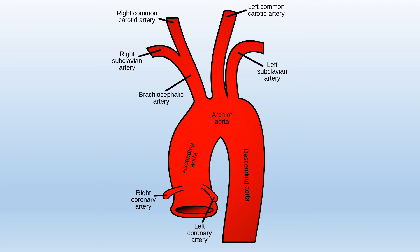The aortic arch is a continuation of the ascending aorta and begins at the level of the second sternocostal joint. It arches superiorly, posteriorly, and to the left before moving inferiorly as the descending aorta. The aortic arch ends at the level of T4 vertebrae. The arch is still connected to the pulmonary trunk by the ligamentum arteriosum, which is a remnant of the fetal ductus arteriosus.